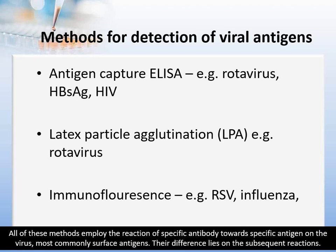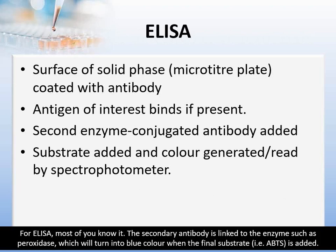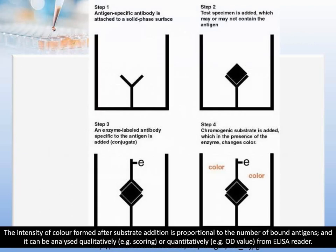Their differences lie in the subsequent reaction. For ELISA, the secondary antibody is linked to an enzyme such as peroxidase, which will turn blue when the final substrate such as ABTS is added. The intensity of colour formed after substrate addition is proportional to the number of bound antigens, and it can be analysed qualitatively, for example by scoring method, or quantitatively by using OD value from the ELISA reader.